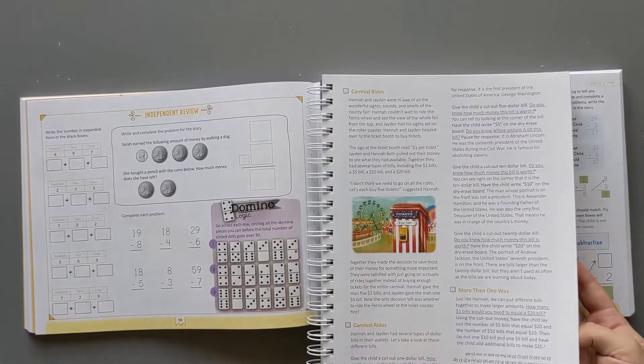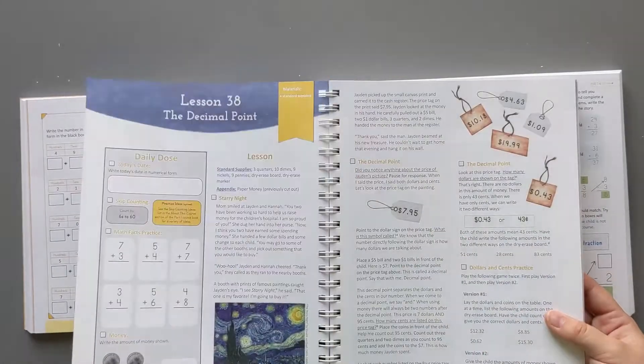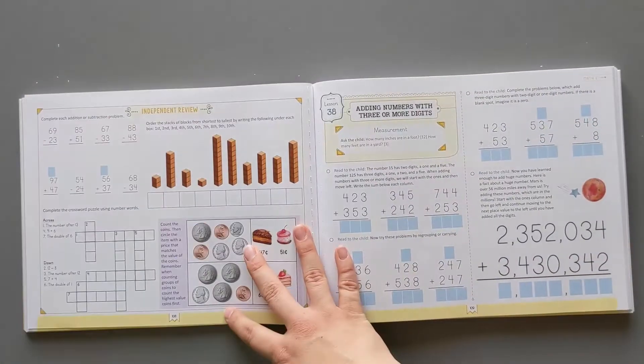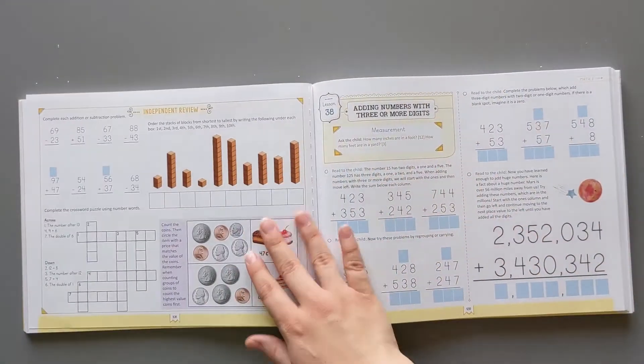Then you jump into your lesson. Half a page here, a page here, student worksheet, and bonus independent activity. Here we have the one page. One page is it. You have the one page of the lesson and then the independent review.